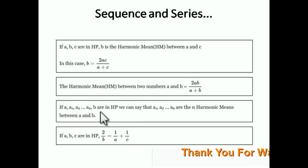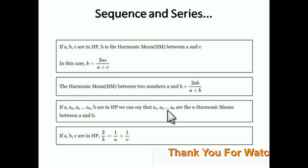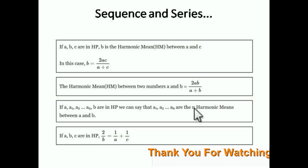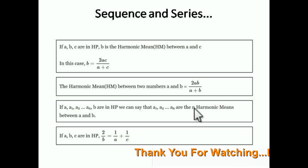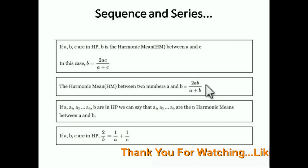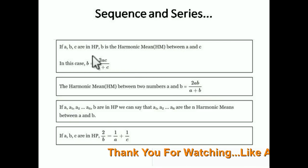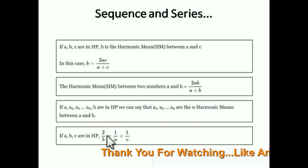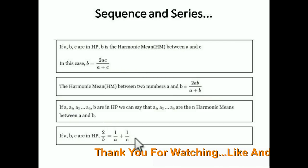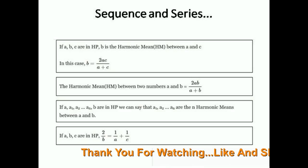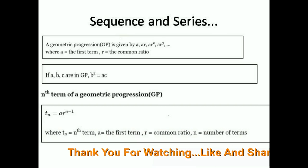If a₁, a₂, up to aₙ are in HP, we can say that these are n harmonic means between the first and last terms. The harmonic mean between any two numbers can be found using the formula b = 2ac/(a + c), or the sequential formula for HP.